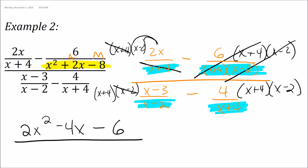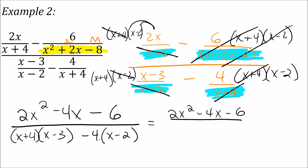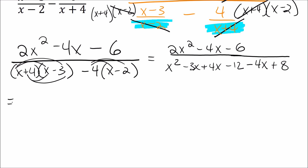On the bottom, (x minus 2) over (x minus 2) becomes 1, so I'm left with (x plus 4)(x minus 3). On the right-hand side, (x plus 4) over (x plus 4) is just 1, so I'm left with minus 4 times (x minus 2). Let me simplify the denominator: foiling (x plus 4)(x minus 3) gives x squared minus 3x plus 4x minus 12, and distributing the minus sign through minus 4(x minus 2) gives negative 4x plus 8.